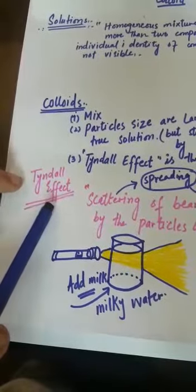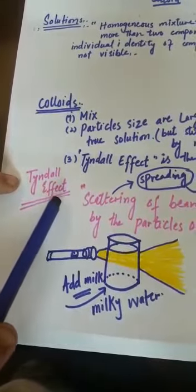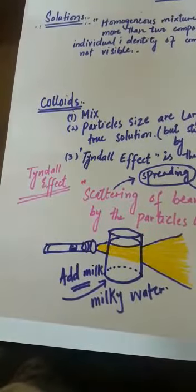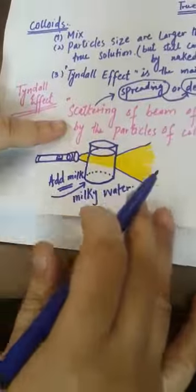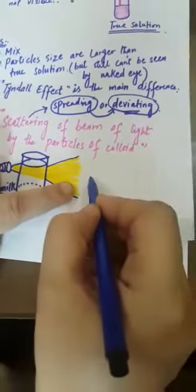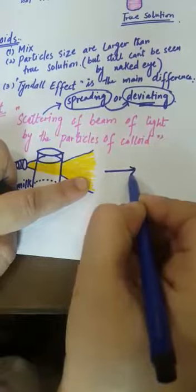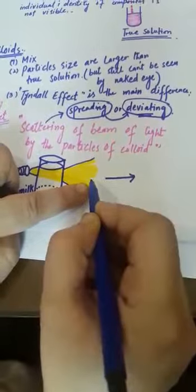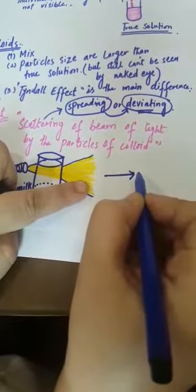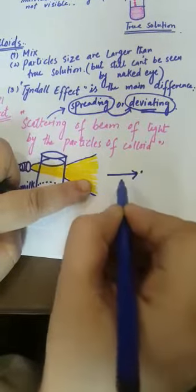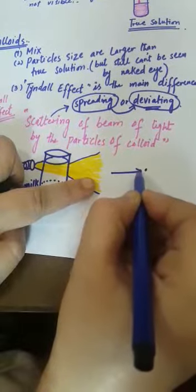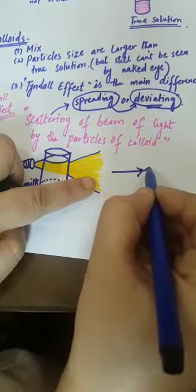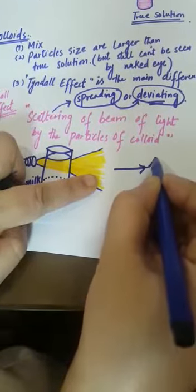We will discuss the Tyndall effect, but before this I will explain this to you. As you know, light travels in a straight line. We have a beam of light, it is always in a straight line. But if there is a particle in its way, then what will happen?